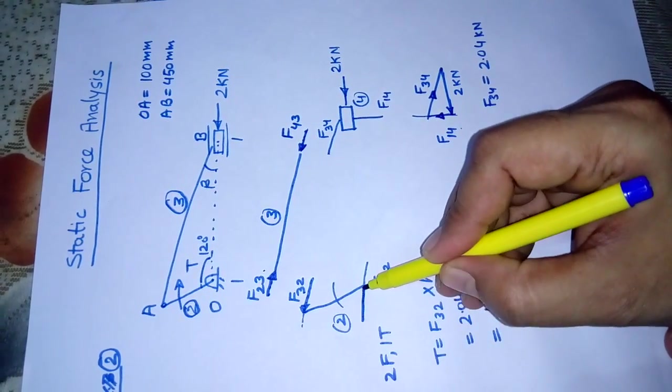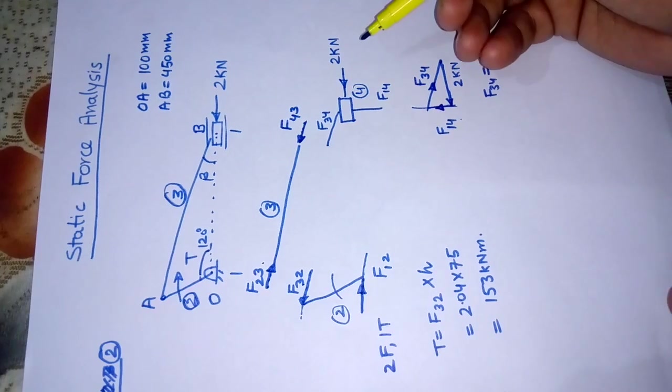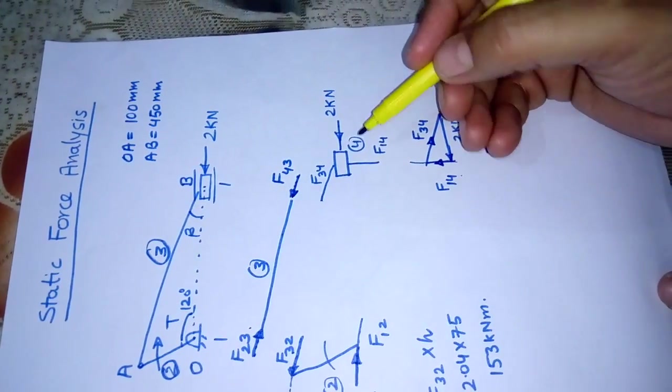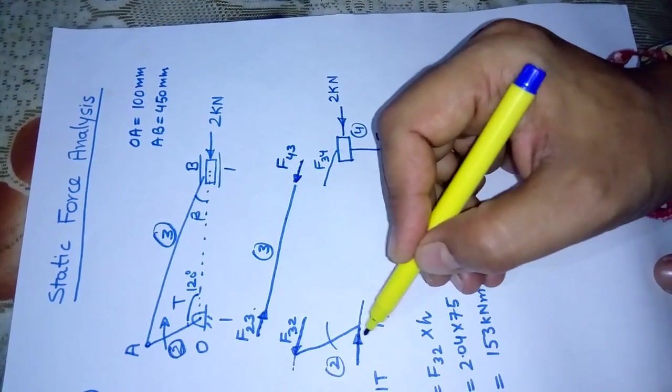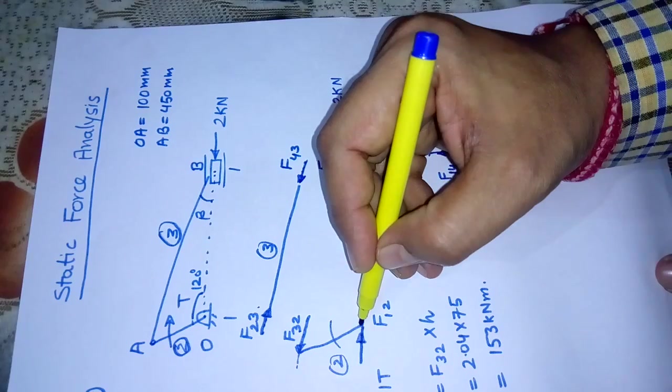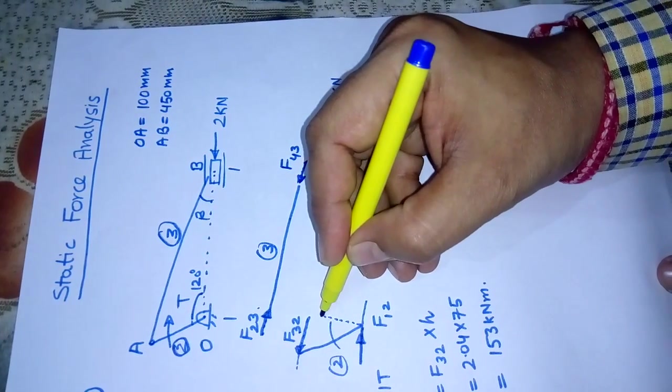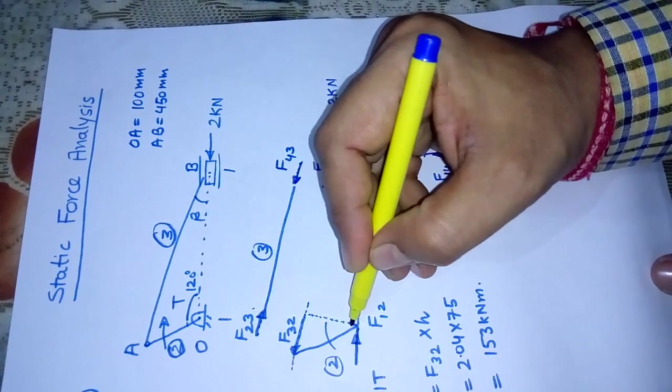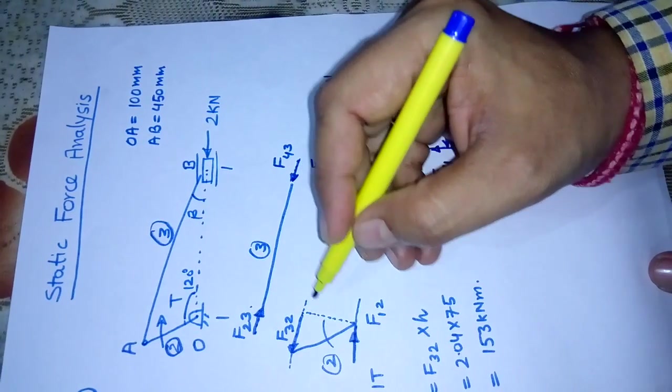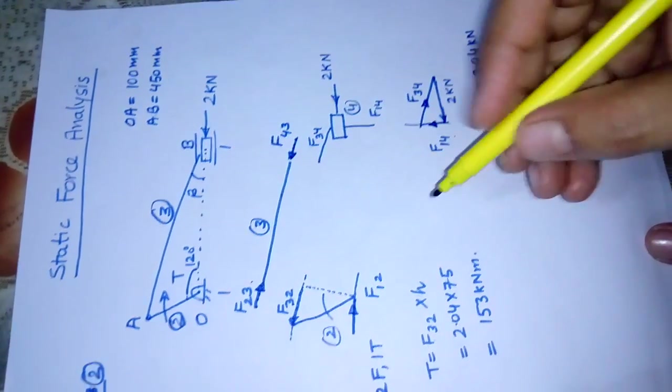Because this is opposite to this, F32 acts in this direction, and F12 acts like this. As we have done in the first problem, we now determine the perpendicular distance between these two parallel forces. We draw a perpendicular line and measure this distance h. If we do it graphically, we find h is 75 mm.